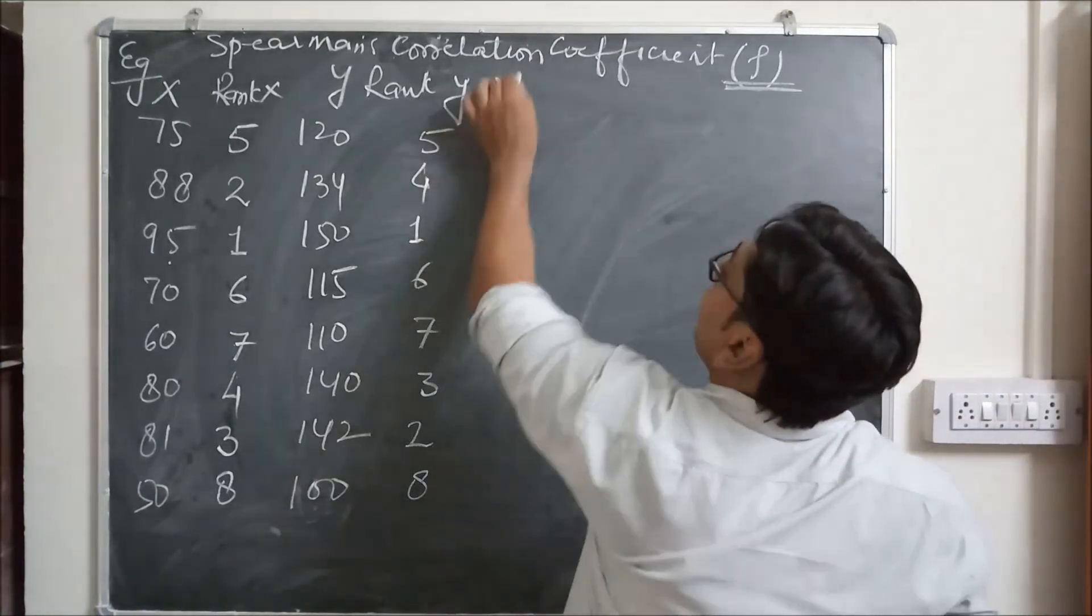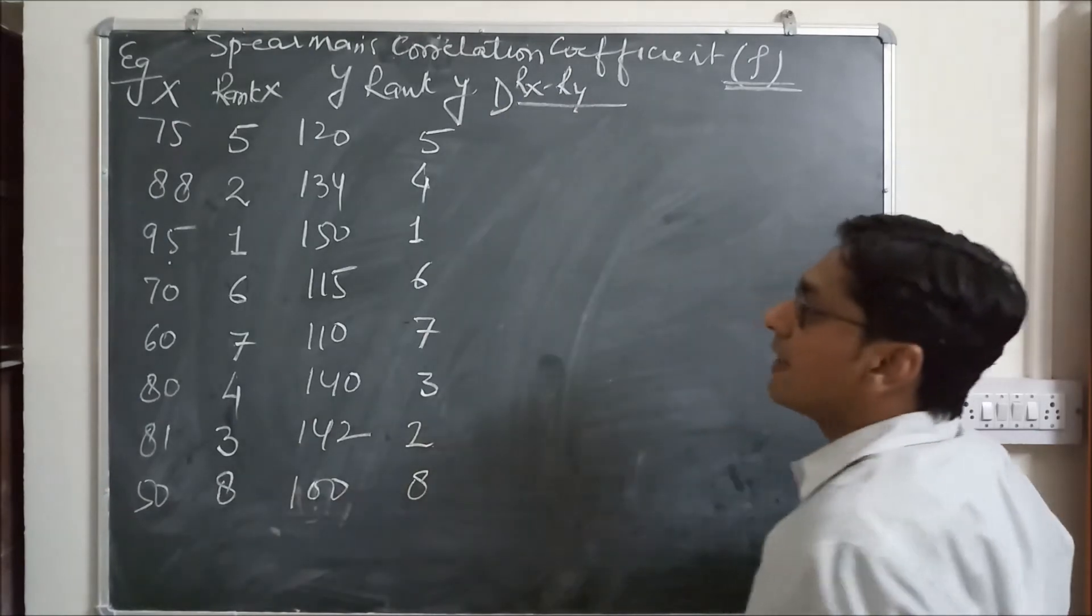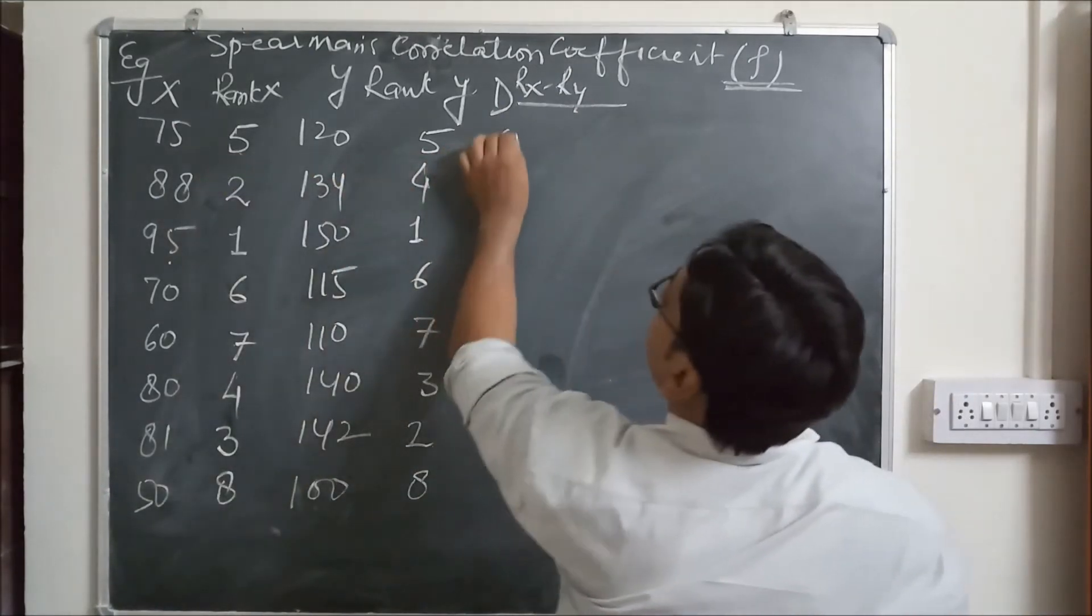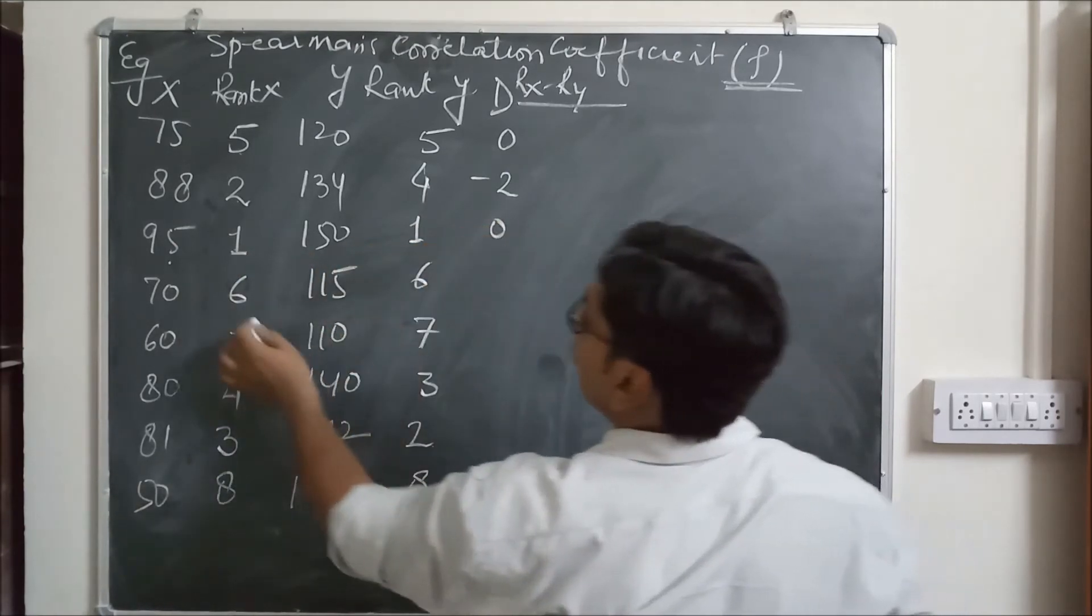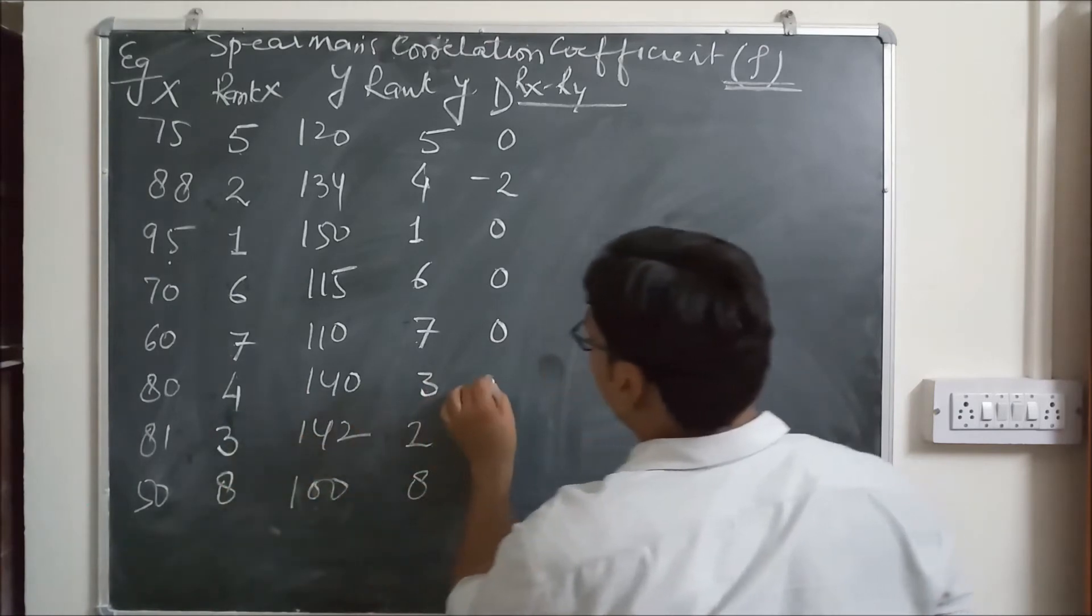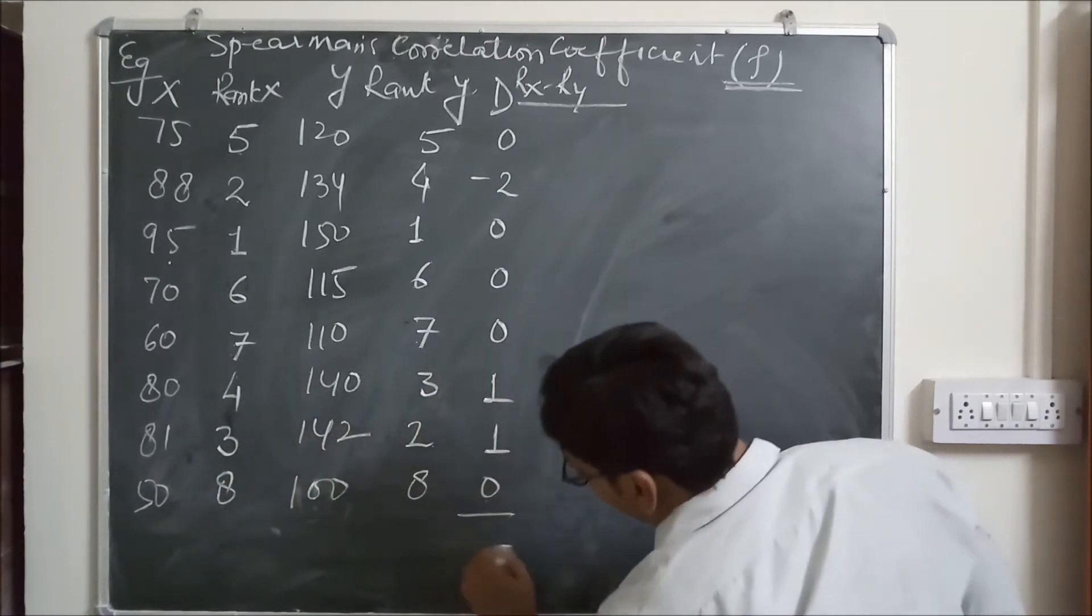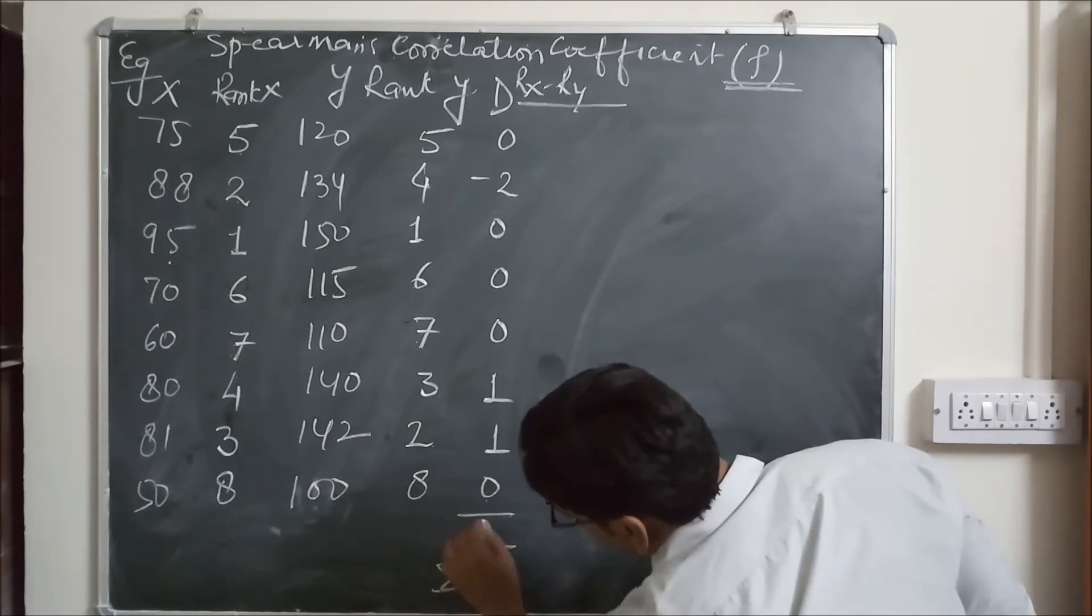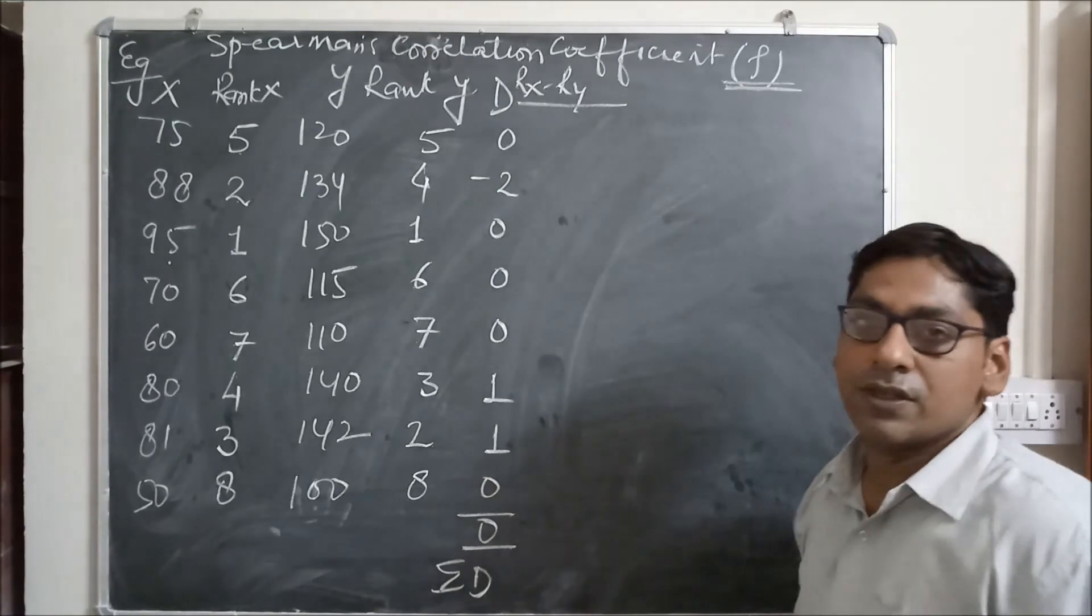Now it is D: rank X minus rank Y. 5 minus 5 equals 0, 2 minus 4 equals minus 2, 1 minus 1 equals 0, 6 minus 6 equals 0, 7 minus 7 equals 0, 4 minus 3 equals 1, 3 minus 2 equals 1, 8 minus 8 equals 0. Sum of this should be equal to 0.